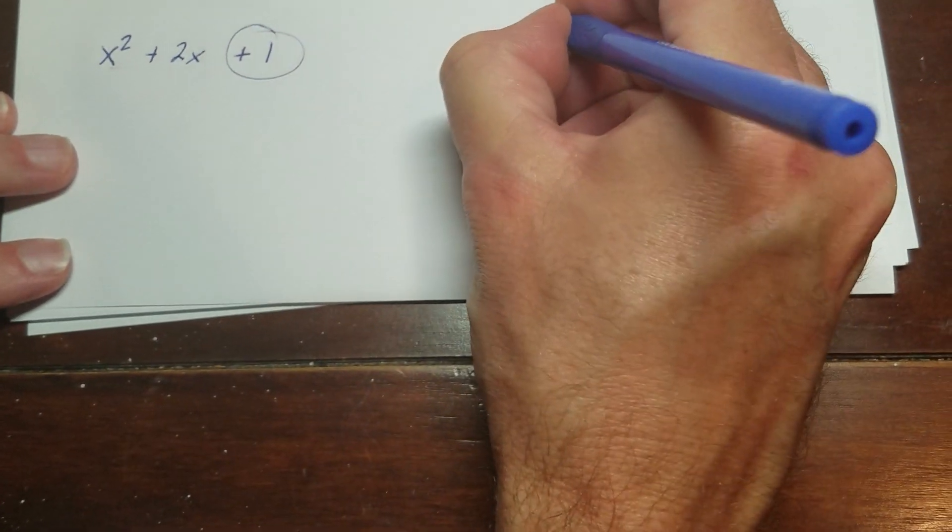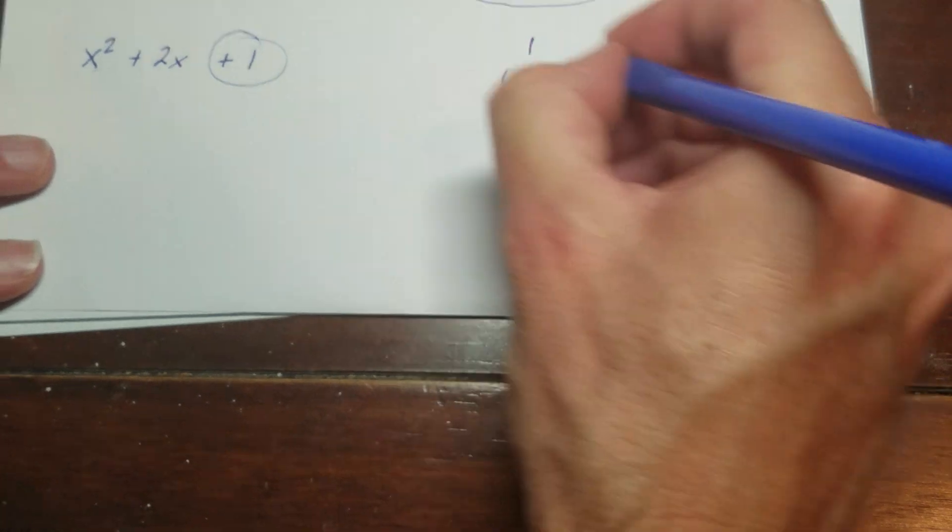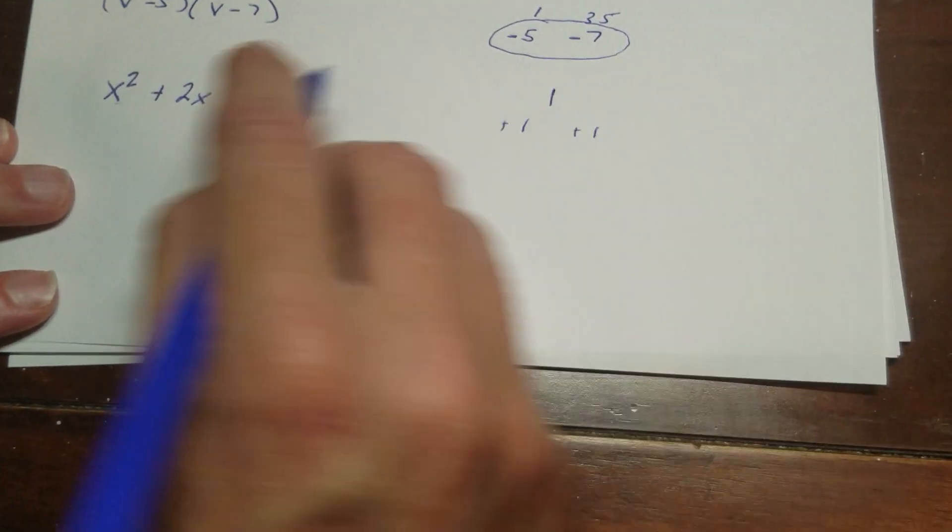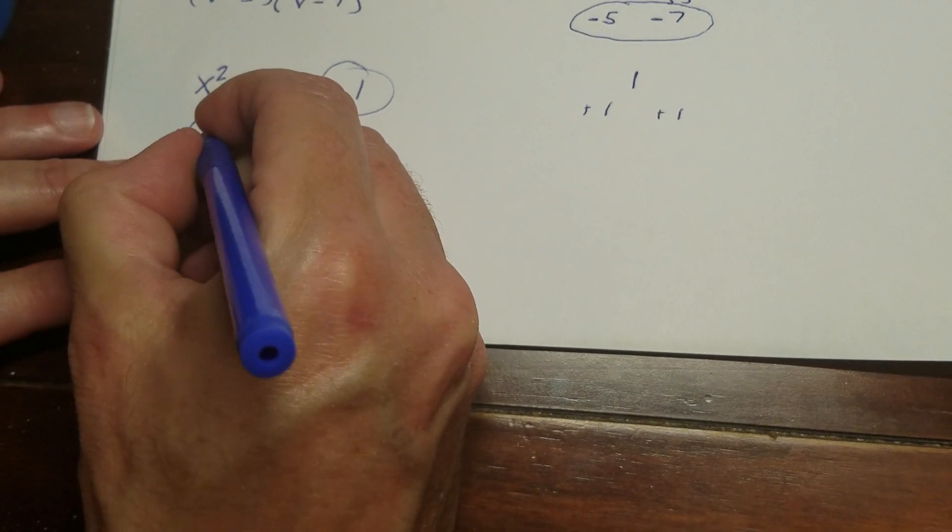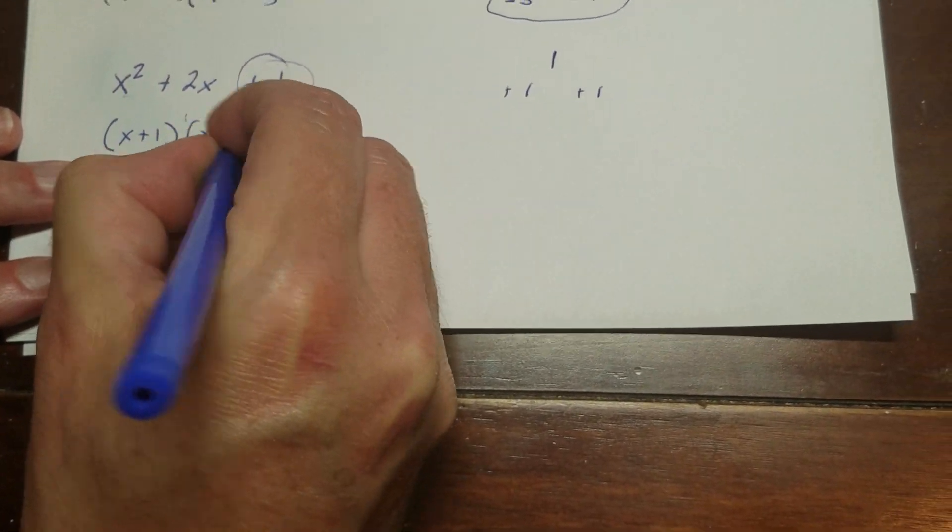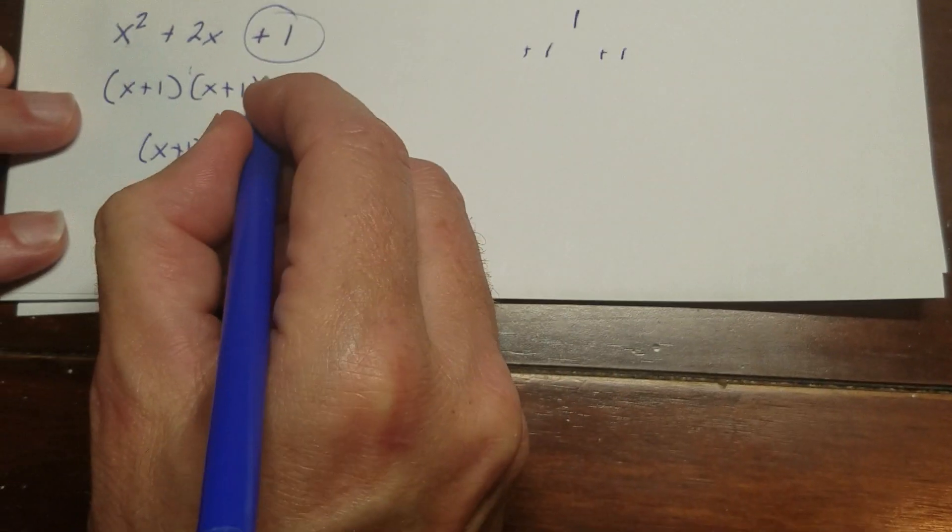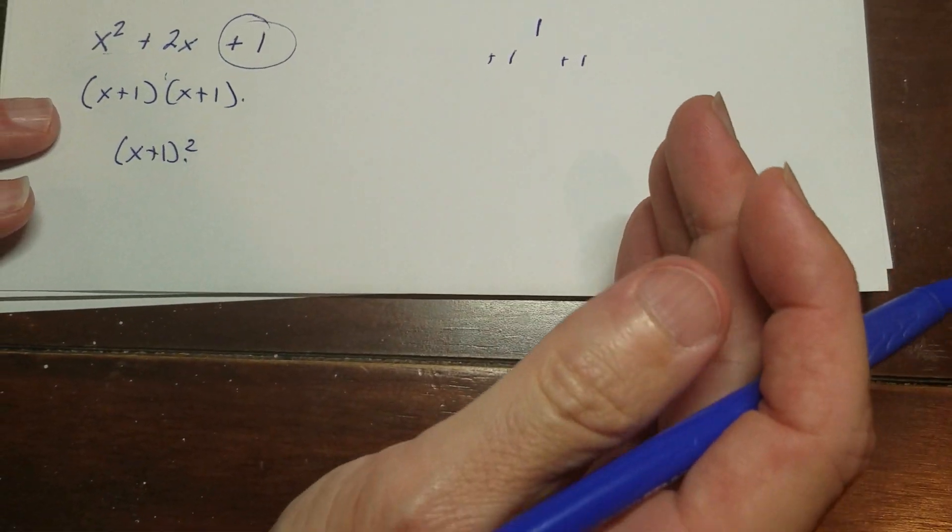Now my end number is 1. And the only factors of 1 are 1 and 1. So this is clearly a plus 1 and a plus 1 to give me a 2. So this is (x + 1) times (x + 1), which means the same thing as (x + 1)². If you wrote it like this or you wrote it like this, it really doesn't matter.